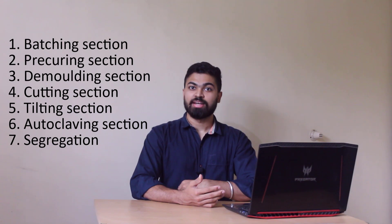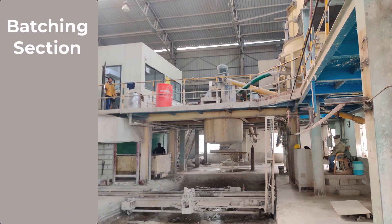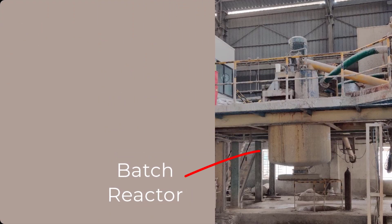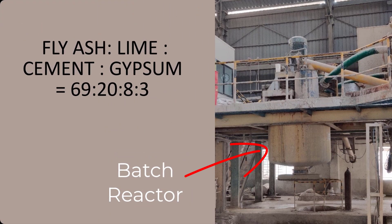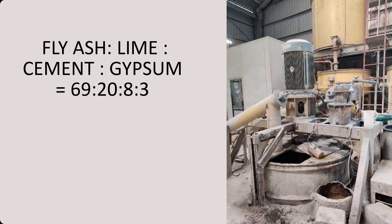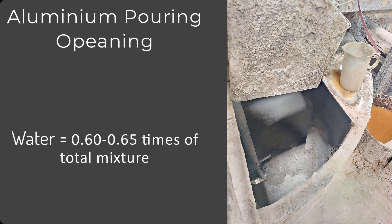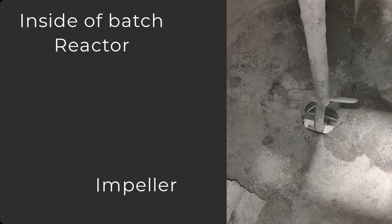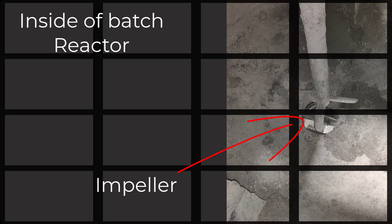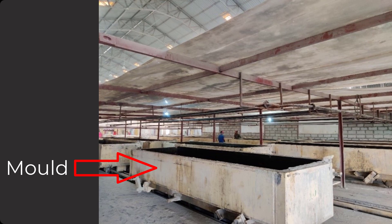The whole process is divided into seven sections. Let us discuss them one by one. The batch section consists of the batch reactor where raw material is mixed in the following ratios: fly ash, lime, cement, and gypsum are in the ratio of 69:28:3 respectively, whereas aluminium is about 0.08% of the total dry material. Water is 0.6 to 0.65 times of the total mixture. It takes about six to seven minutes for the mixing process, then the mixture is poured into a large cuboidal box called the mold.